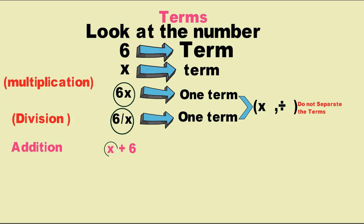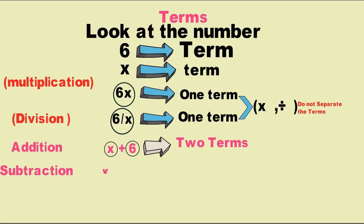When two terms or three terms are connected by division or multiplication, they remain one term. But when we add or subtract — for example, x plus something — after the plus sign they become separate terms. These are 2 terms.